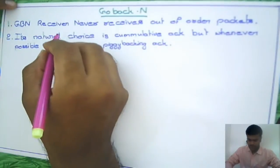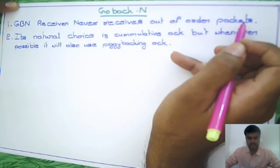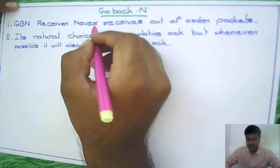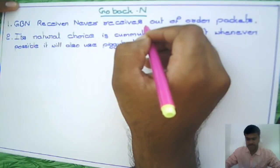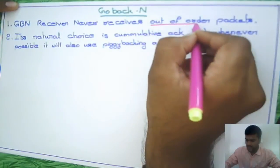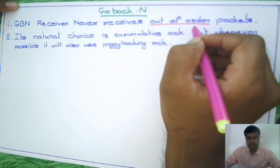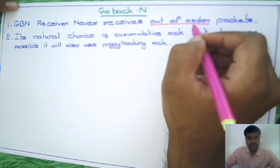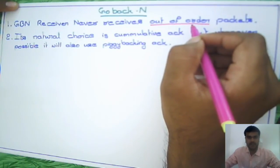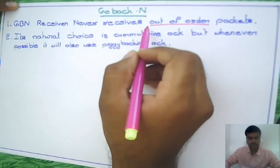Looking at the characteristics of Go-Back-N: the receiver never receives out-of-order packets. On the receiver side, whenever the first packet is received with sequence number 0, the receiver is always expecting the next packet as 1 — in order. Whenever it receives a packet with sequence number N, it expects the next packet as N plus 1. That is why one major characteristic of Go-Back-N is that it never receives out-of-order packets.